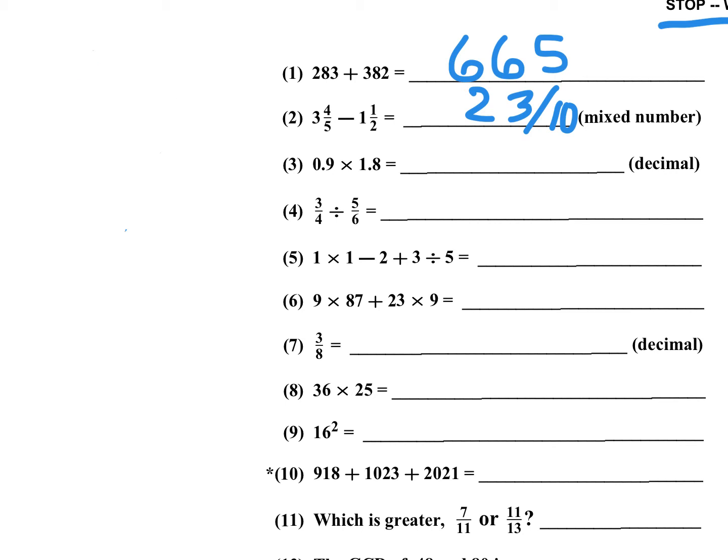Problem number three, 0.9 times 1.8 as a decimal. 9 times 9 is 81, times 2 is 162. And since we want the answer as a decimal, you have 1, 2, 2 decimal places from the right. If you're multiplying 9 times 18, remember that 18 is 9 times 2. So I did 9 times 9 is 81, and 81 times 2 is 162, and then move your decimal over 2 places.